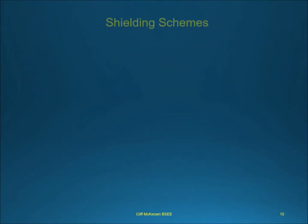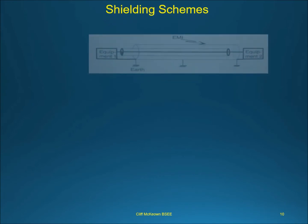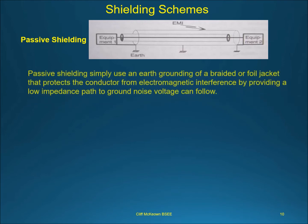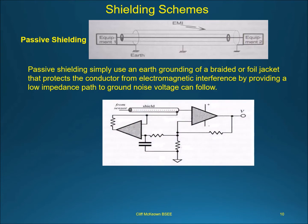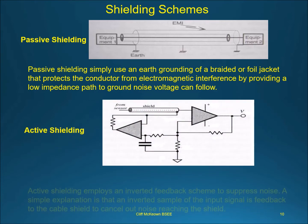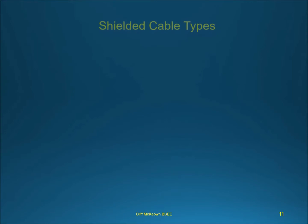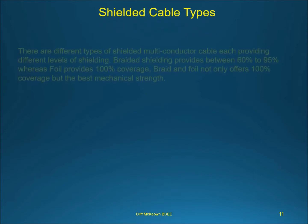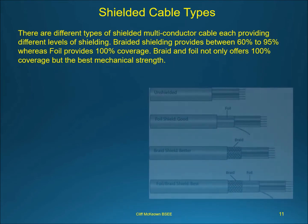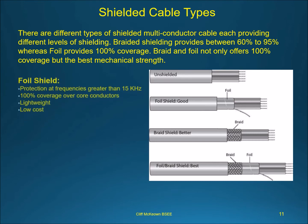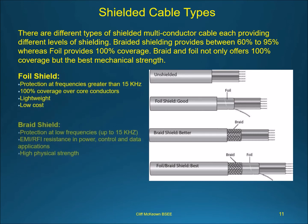Shielding schemes. Passive shielding simply uses an earth grounding of a braided or foil jacket that protects the conductor from electromagnetic interference by providing a low impedance path to ground that noise voltage can follow. Active shielding employs an inverted feedback scheme to suppress noise — an inverted sample of the input signal is fed back to the cable shield to cancel out noise reaching the shield. There are different types of shielded multi-conductor cables, each providing different levels of shielding. Braided shielding provides between 60% to 95% coverage, whereas foil provides 100% coverage. Braid and foil combined not only offers 100% coverage but the best mechanical strength.